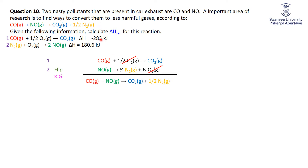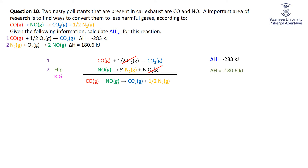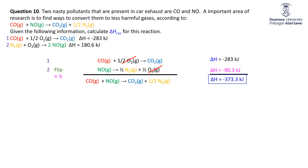Adding them together gives the target equation. Now modifying the ΔH values: equation 1 used as-is gives −283. Equation 2 was +180.6, flipped to −180.6, then halved to −90.3. Adding −283 and −90.3 gives ΔH = −373.3 kJ. These start to become fun once you get the hang of it!